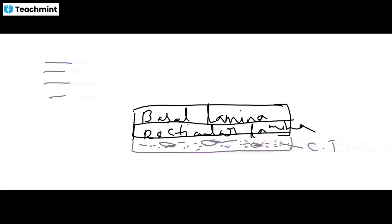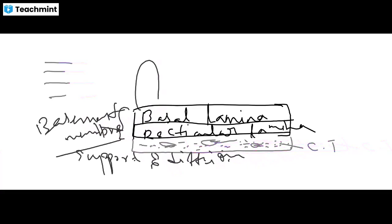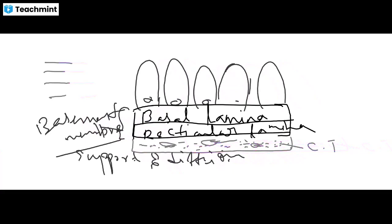The basement membrane has two components: basal lamina and reticular lamina. Epithelial cells have two surfaces — the free apical surface facing outward and the basal surface attached to the basement membrane.